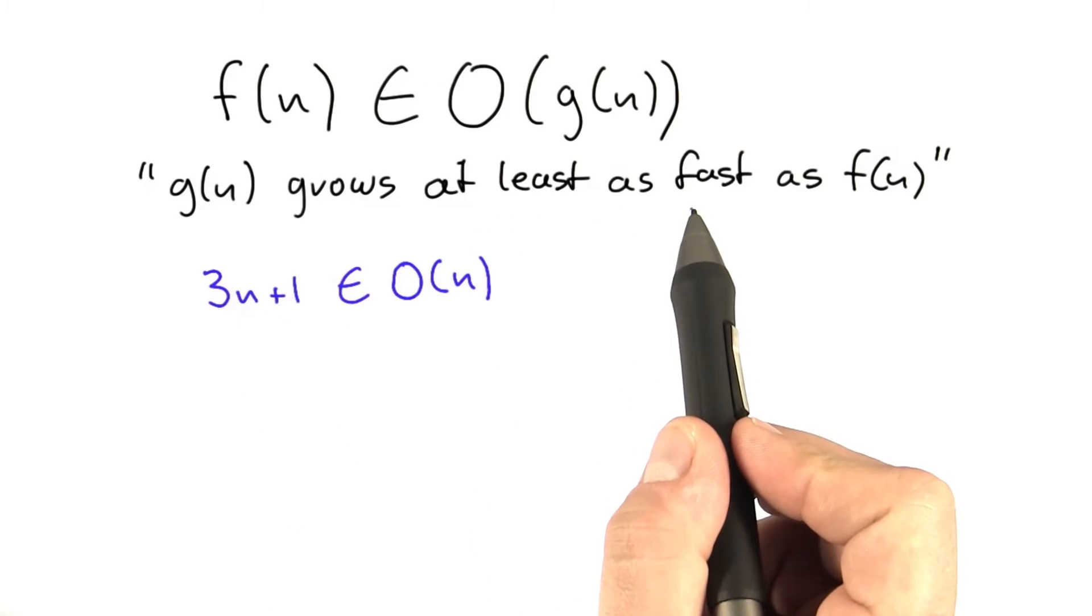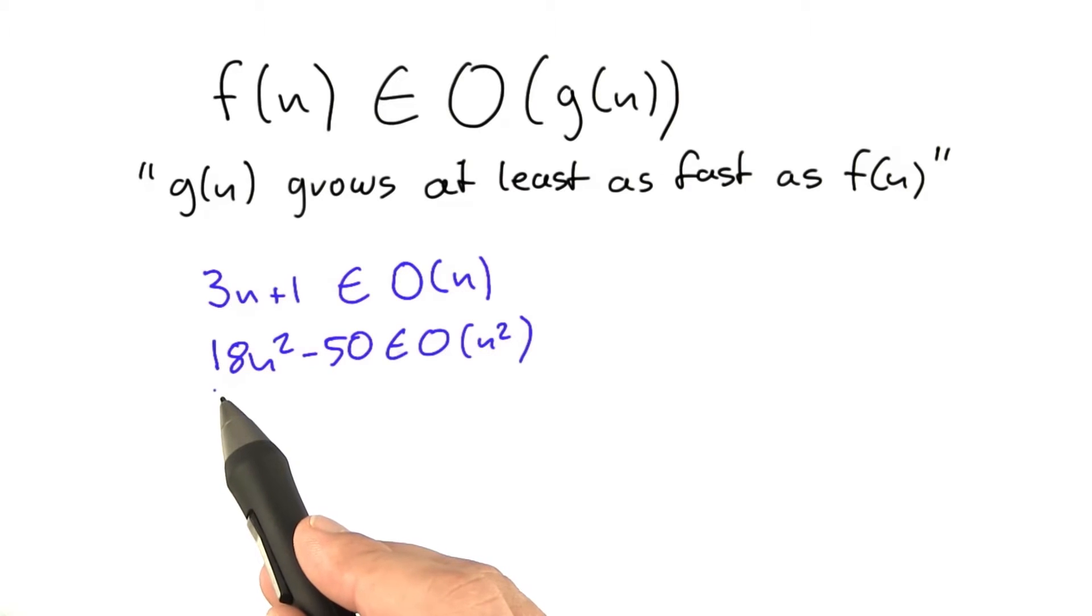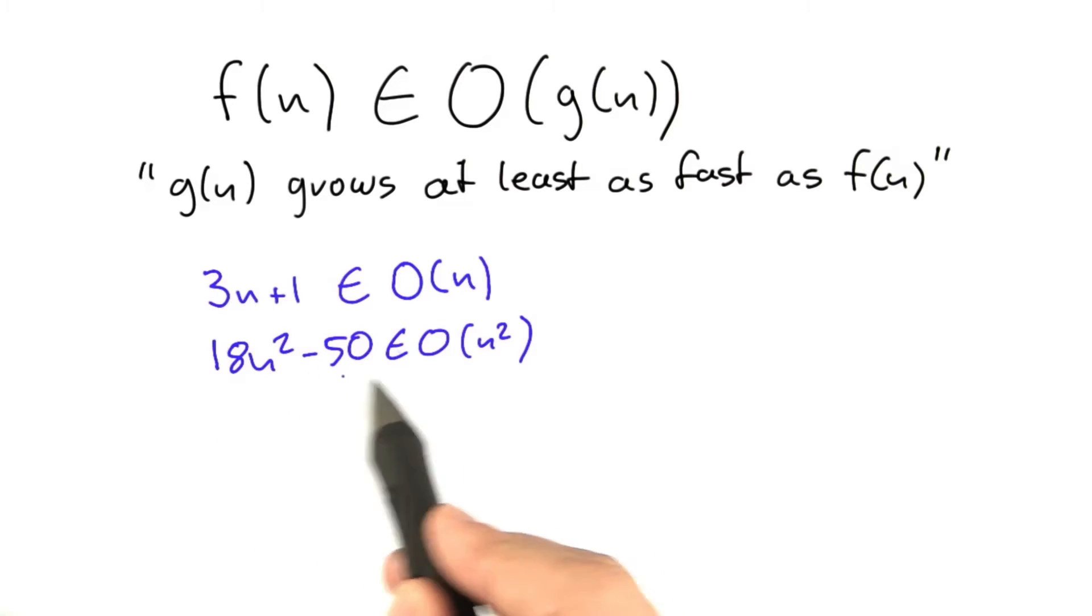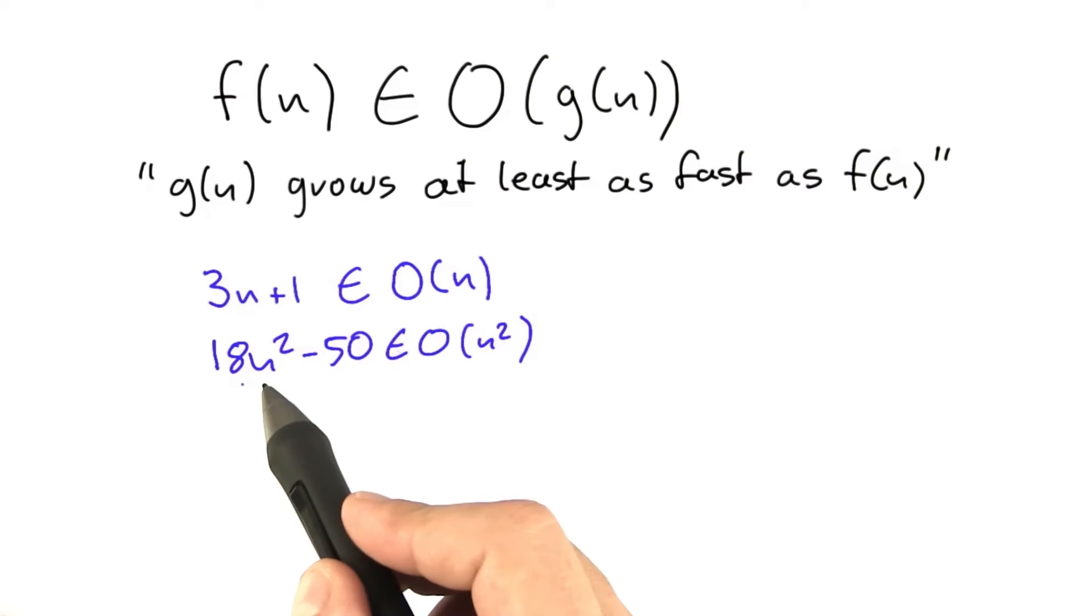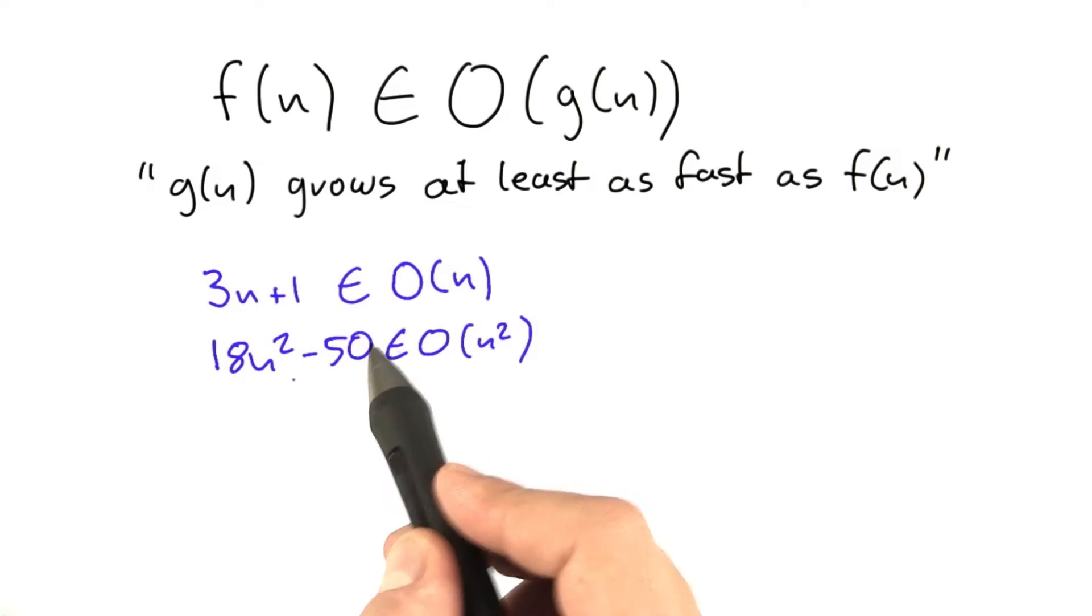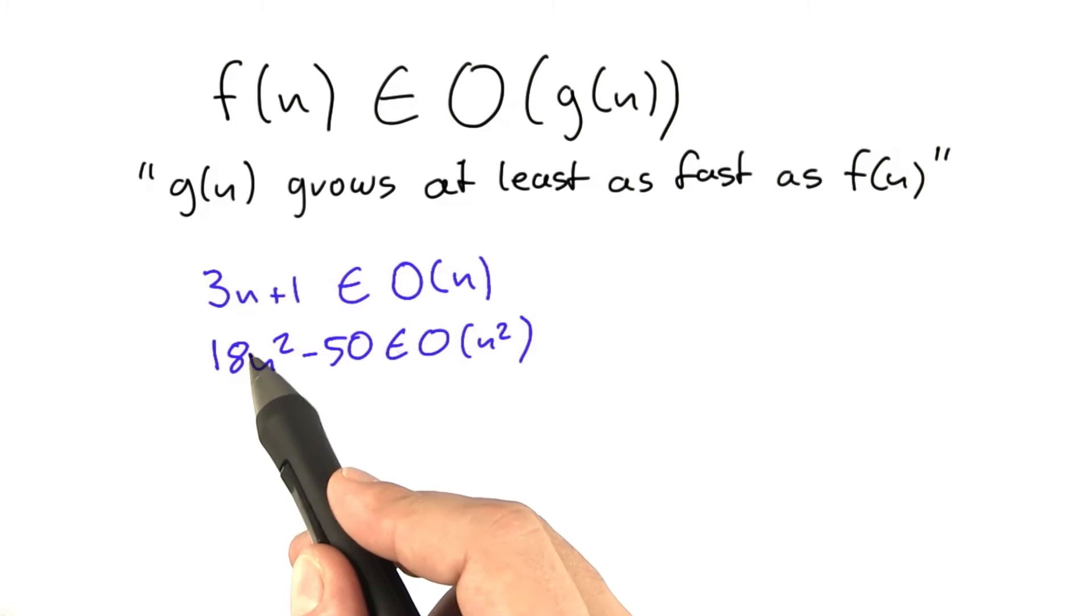It does grow at least as fast as n. The function 18n squared minus 50 would be contained in O of n squared because again n squared here is the fastest growing term. We do not care about the minus 50 and we don't care about constants.